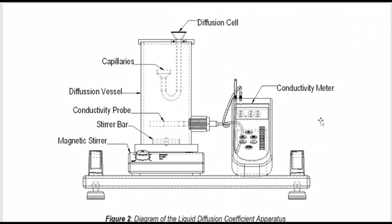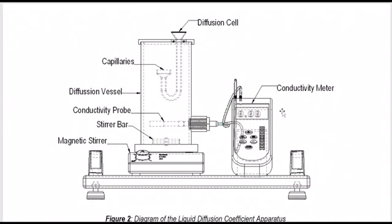The objective of the experiment is to determine the liquid diffusion coefficient of sodium chloride solution in distilled or deionized water. First, you need to prepare standard solutions of 1.0 molar, 1.5 molar, 2.0 molar, 2.5 molar, 3.0 molar, and 3.5 molar. Slightly stir each solution for more accurate measurements. Using the conductivity probe, measure and record their corresponding conductivity values. These standard conductivity measurements will be used to determine the concentration.